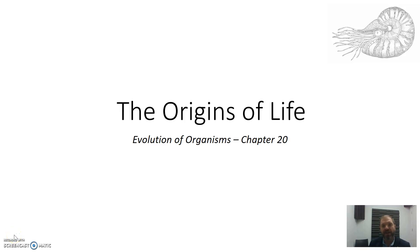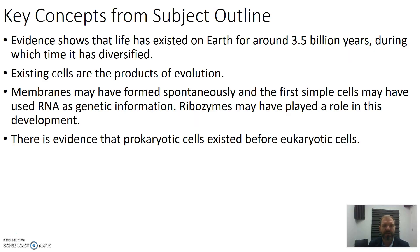This video is on the origins of life and is the first video of the evolution of organisms topic. We're going to look at some of those really early starting off events that led to life on earth. The key concepts are that there's evidence that earth had life around 3.5 billion years ago, that existing cells are the products of evolution, that this may have started with spontaneous formation of membranes and the action of RNA, and that prokaryotic cells probably existed before eukaryotic cells.